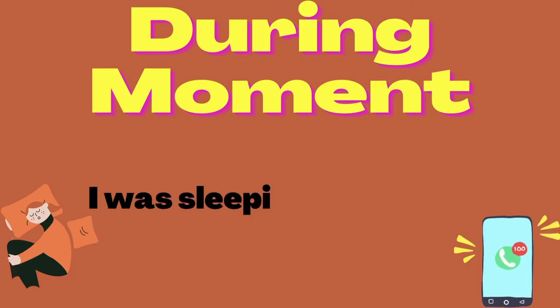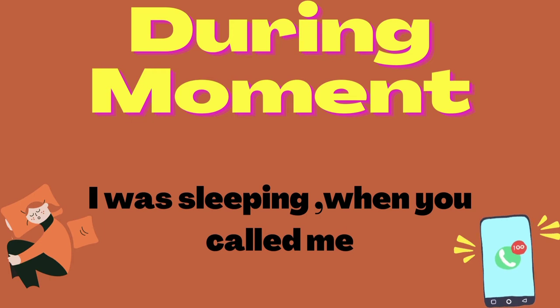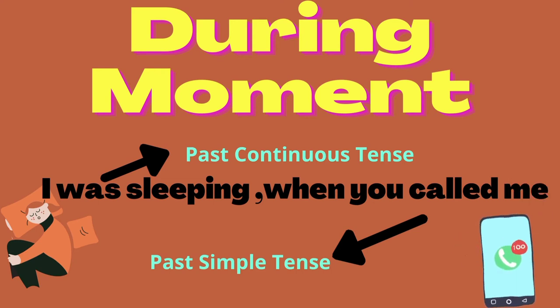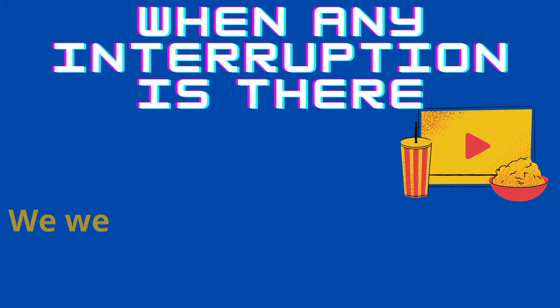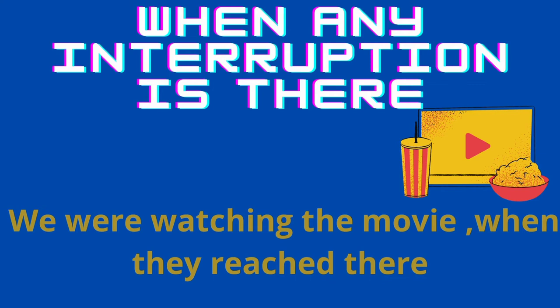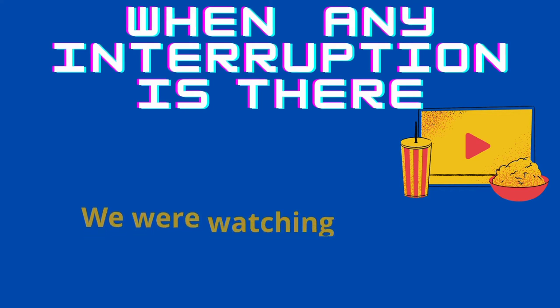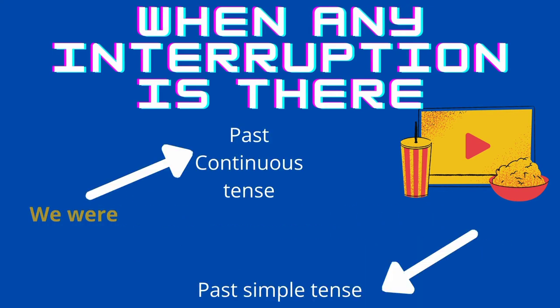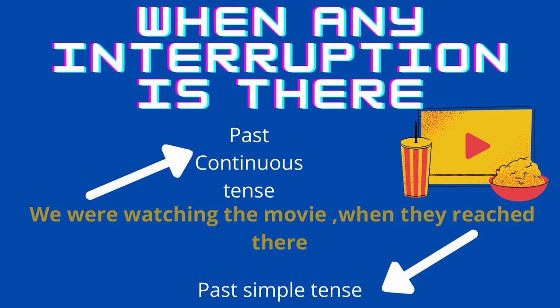The second category is 'during the moment': I was sleeping when you called me. Here 'I was sleeping' is past continuous, and 'when you called me' is past simple — a combination of two tenses. The third category is interruption: We were watching a movie when they reached there. Perhaps guests arrived at home and interrupted us. Again, past continuous combined with past simple.